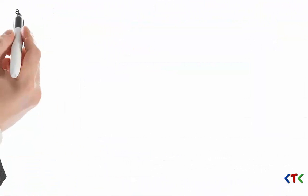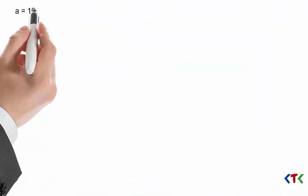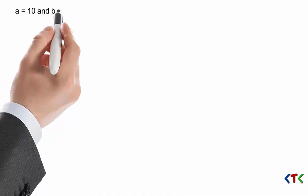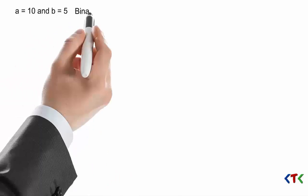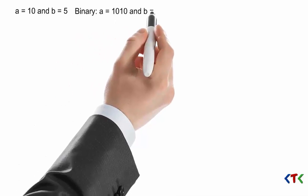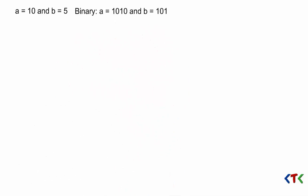As you know, in our program we have a equals 10 and b equals 5. We need to convert these to binary. So a equals 1010 and b becomes 101. Let's write the logic which we use in our program.